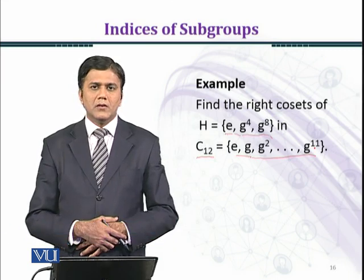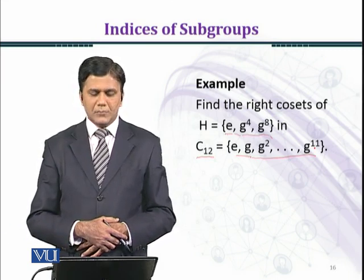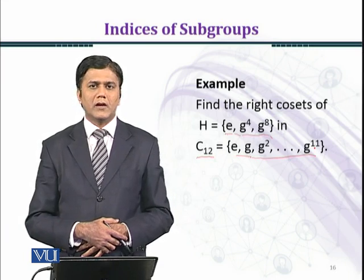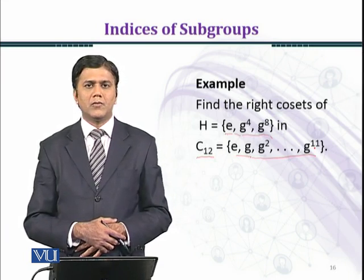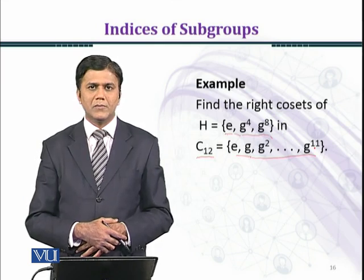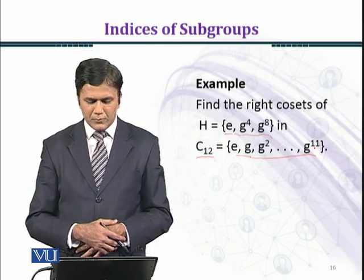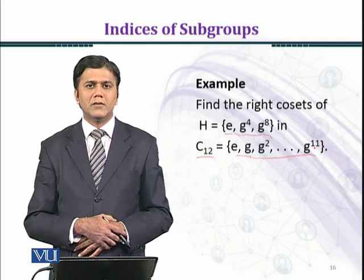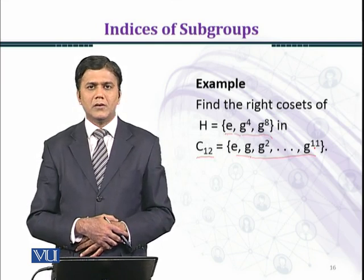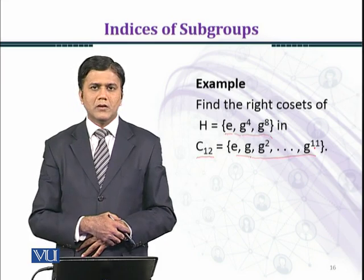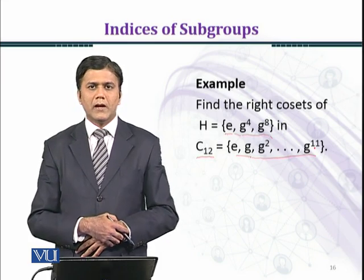Here you can see that we have the cyclic group in multiplicative notation. Before this, we consider Z12 in additive notation. So here you can see the elements in multiplicative notation, and here we have the general form of elements.